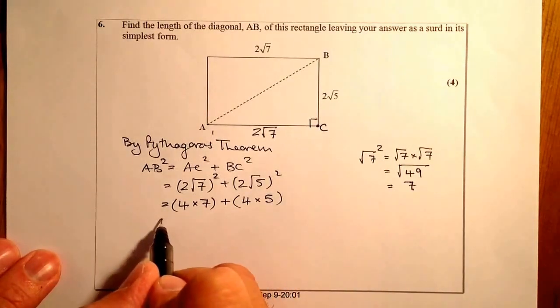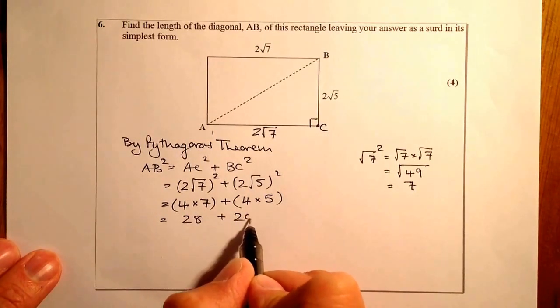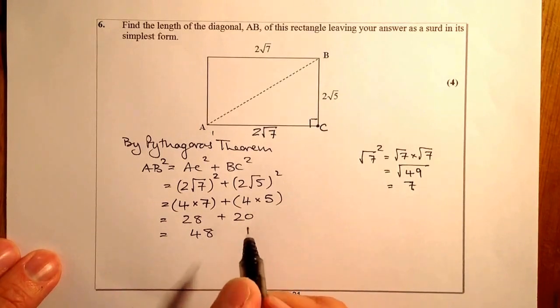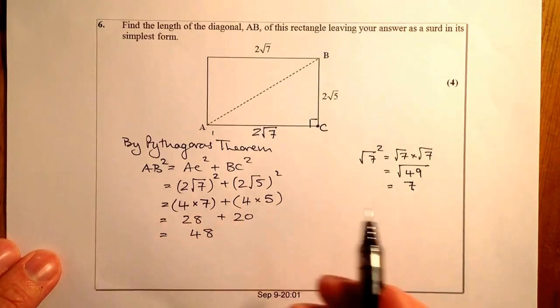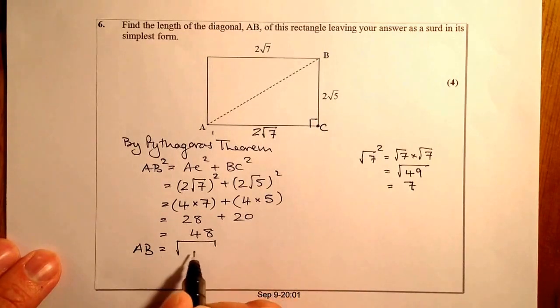Okay, so let's work these bits out. So that's 28 plus 20. That's going to give me an answer of 48. And remember again, this is AB squared. So AB is going to be equal to the square root of 48.